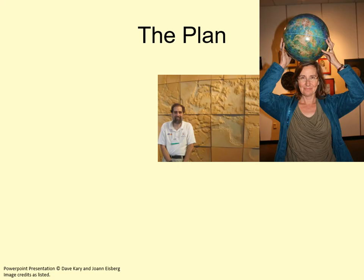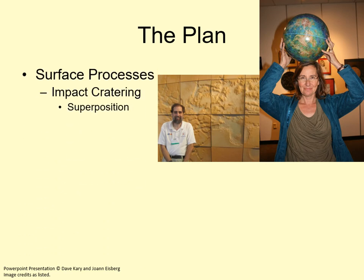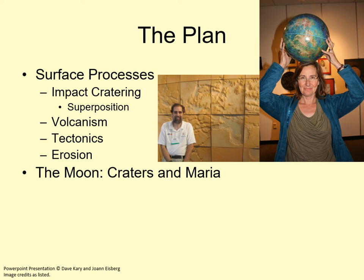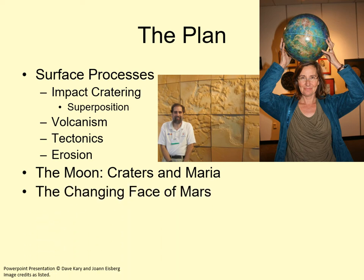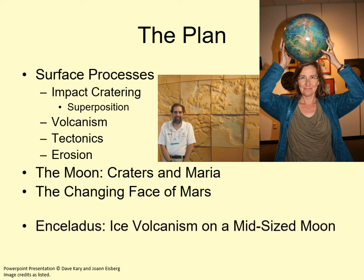We'll start in this presentation by looking at the four important surface processes: impact cratering, volcanism, tectonics, and erosion, and a little bit of how we can learn the history of a world from studying its surface features. Then in later files, we'll look at examples of various planets and moons to get a sense of how these surface processes interact in different ways on different worlds.